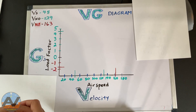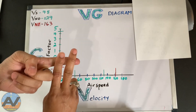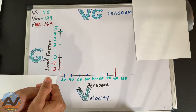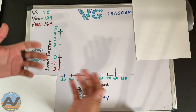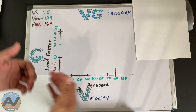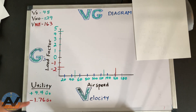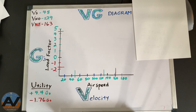Next, we get our weight class. Are we going to be in normal or utility? For today's purposes, I chose utility. Why is that important? Because we need to know how many Gs we can pull depending on the weight category we're in. In the utility weight class, the max we can pull is 4.4 positive Gs and negative 1.76 Gs. If we exceed that, then obviously we can expect some kind of structural integrity failure.